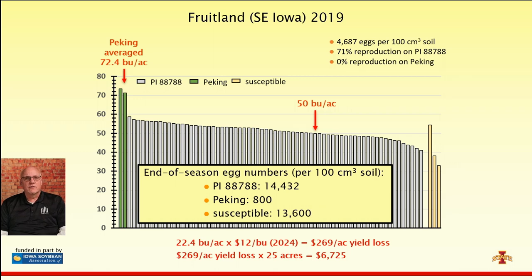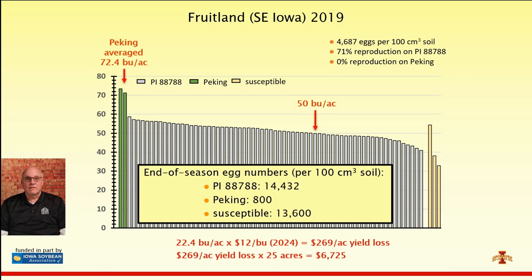Here are the end-of-season egg counts under those plots. We started with 4,687 eggs. At season's end, under susceptible varieties they increased to over 13,000; under all 88788 varieties, over 14,000. Under the two Peking variety plots, numbers were almost undetectable — just 800 eggs per half cup of soil. Those low numbers will have major effects on soybean production two years from now. There's a legacy effect in addition to the short-term income effect of growing Peking versus 88788.